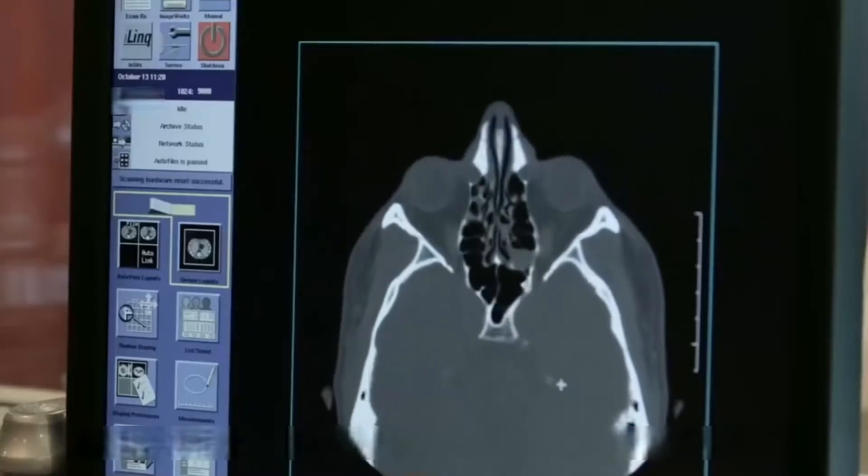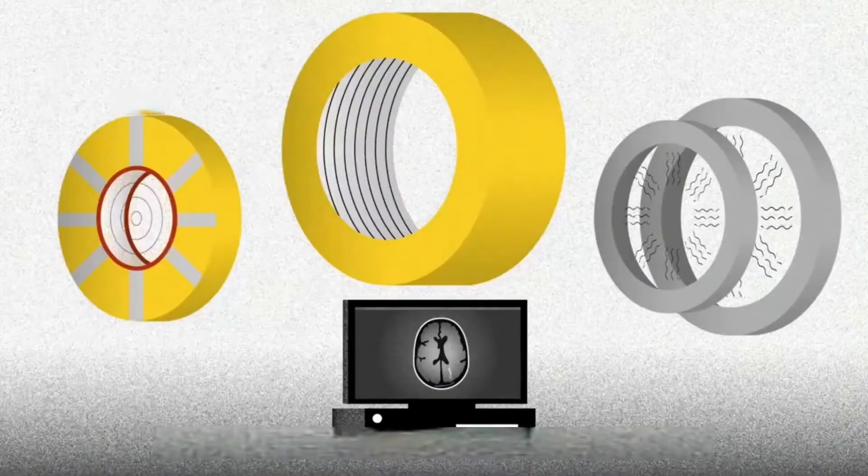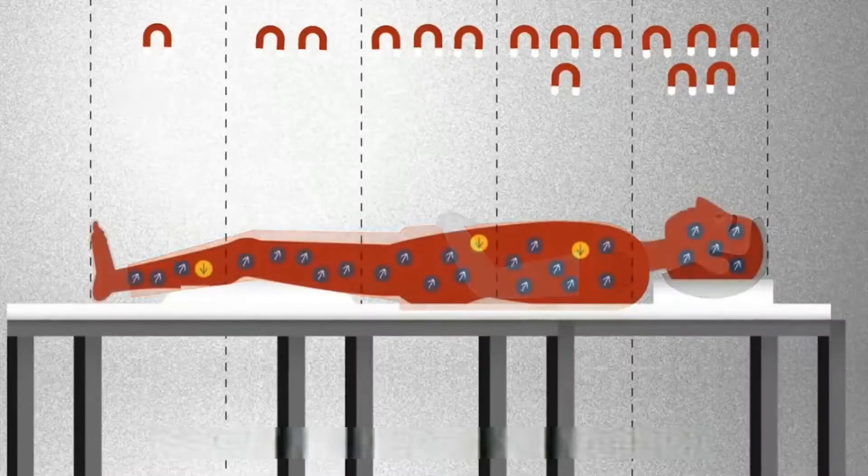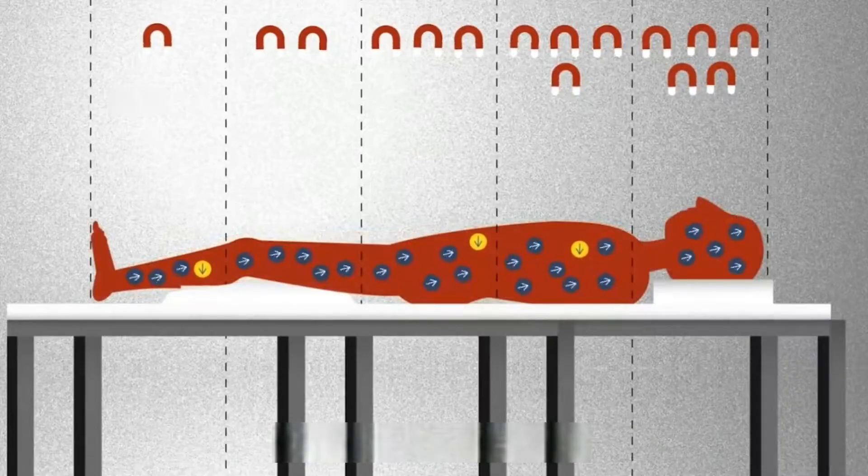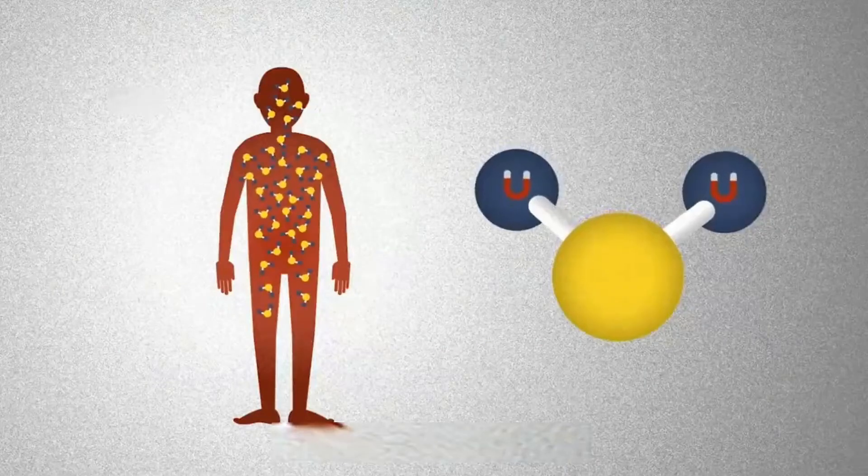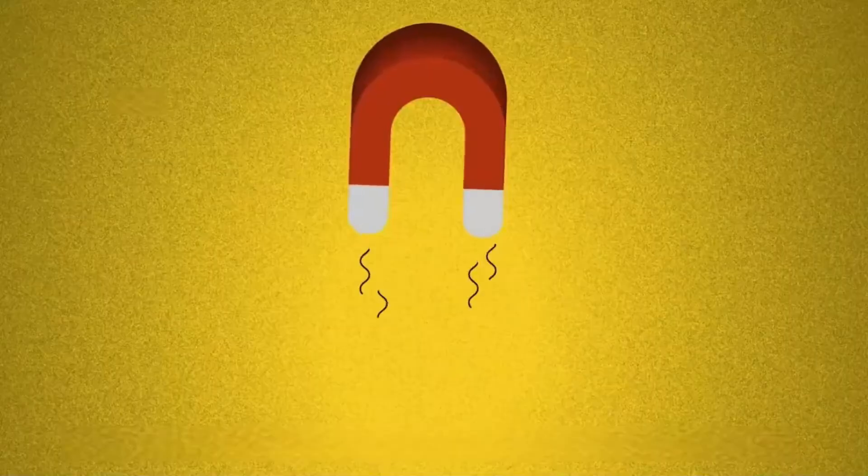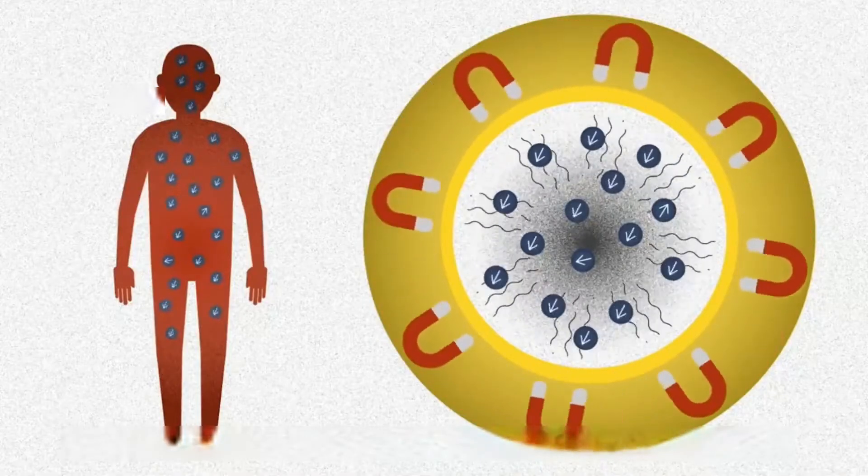NMR works by exciting the nucleus of a hydrogen atom in the body with radio frequency pulses. Because the nucleus is magnetic, like small magnets, they resonate with hydrogen nuclei of the same frequency in a magnetic field, creating a nuclear spin.